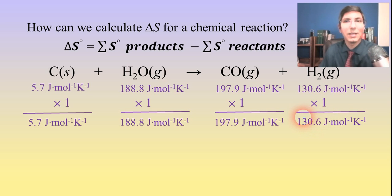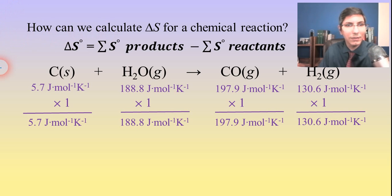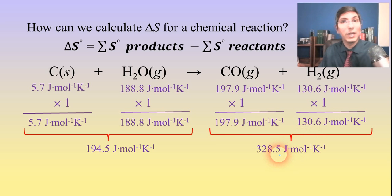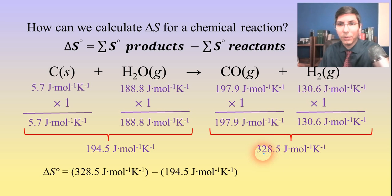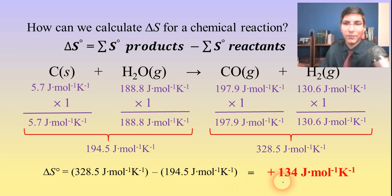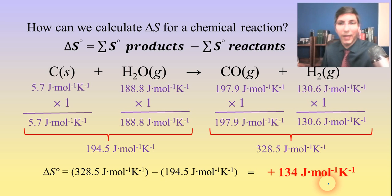Now it's the sum of the products minus the sum of the reactants. The reactants add together to give 194.5 as the total. The products add together to give about 328.5. It's products minus reactants, just like it was for enthalpy — 328.5 minus 194.5. So the overall delta S is positive 134 joules per mole kelvin. That's how we get the numerical value for delta S using these constants.